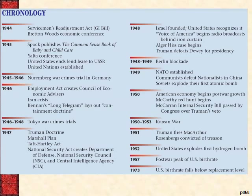To wrap up: the GI Bill was passed in 1944. The Yalta Conference and the UN were established in 1945. The Nuremberg Trials ran 1945-1946. Then 1947 was probably the biggest year from this chapter — the Truman Doctrine, the Marshall Plan, the Taft-Hartley Act, and the National Security Act all passed. Truman defeats Dewey in 1948. The Berlin Blockade and Berlin Airlift occurred in 1948-1949. NATO was established in 1949. McCarthyism begins in 1950. The Korean War lasted 1950-1953. Truman fires MacArthur in 1951. And of course — the baby boom.